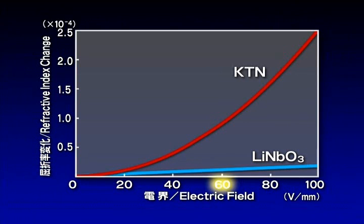With a voltage of 60 volts per millimeter, the KTN crystal performs a 20-fold greater change in the refractive index. In other words, we can change its refractive index using much smaller voltages.